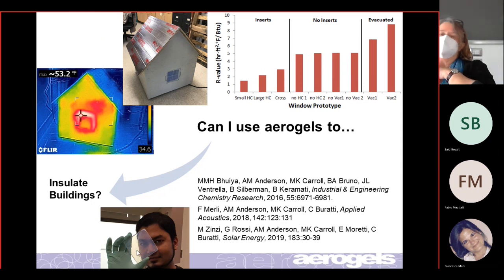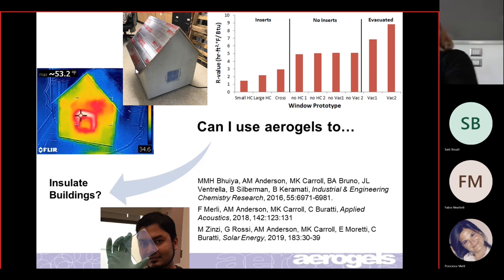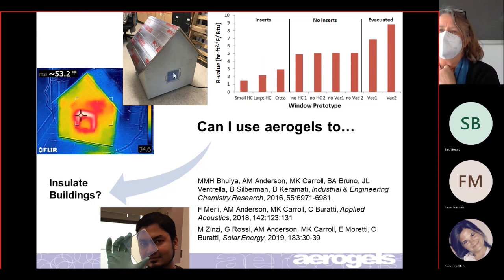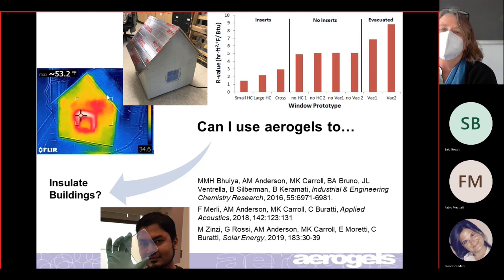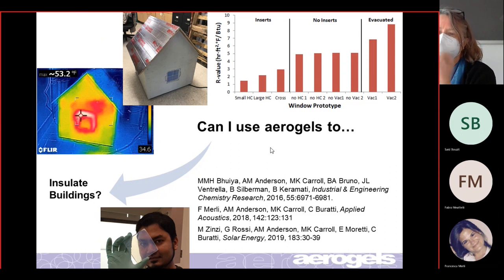This is one of my favorite projects. Bachelor students built this house — that is an aerogel window — and they used aerogel blanket materials to insulate on the inside. I'll talk about aerogels for building insulation on Tuesday next week. You get a lot of these 'can I use aerogels to do something?' questions.